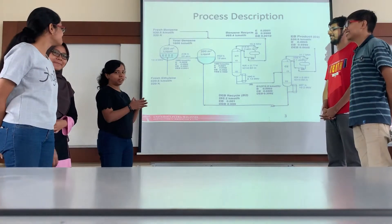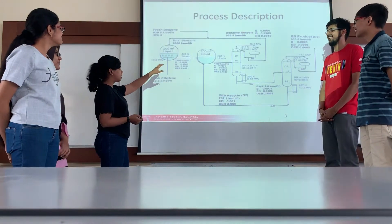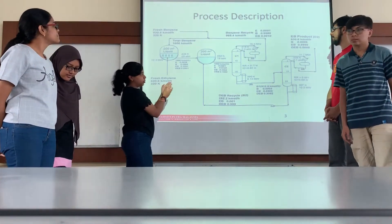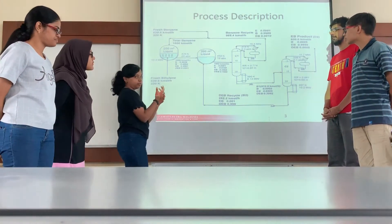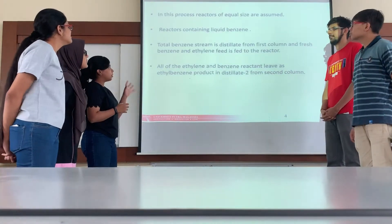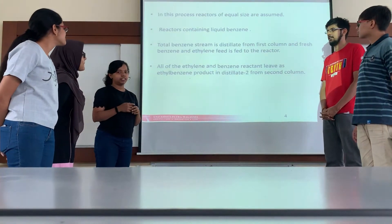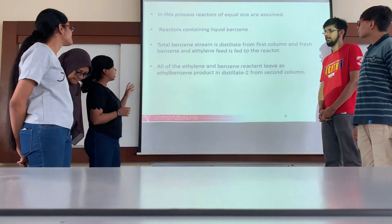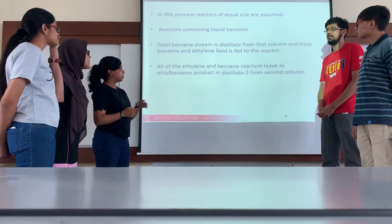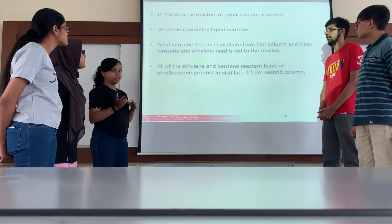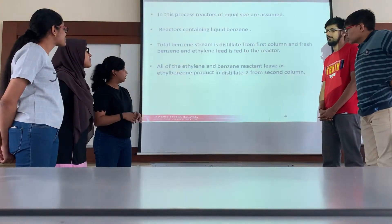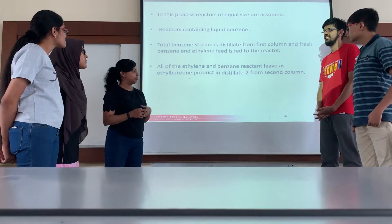Now I will explain the PFD. As you can see, the initial feed and the recycle feed will enter the first reactor and the second reactor. And of course, it will go through two distillation columns where it will get purified and the product will be ethylbenzene. In this process, there will be two reactors, which are the CSTR reactors, and they will have equal size. The reactors contain liquid benzene and the total benzene stream is fed from the first column. Fresh benzene and ethylene feed is fed to the first reactor. All of the ethylene and benzene reactants leave as ethylbenzene product in distillate 2 from the second column.